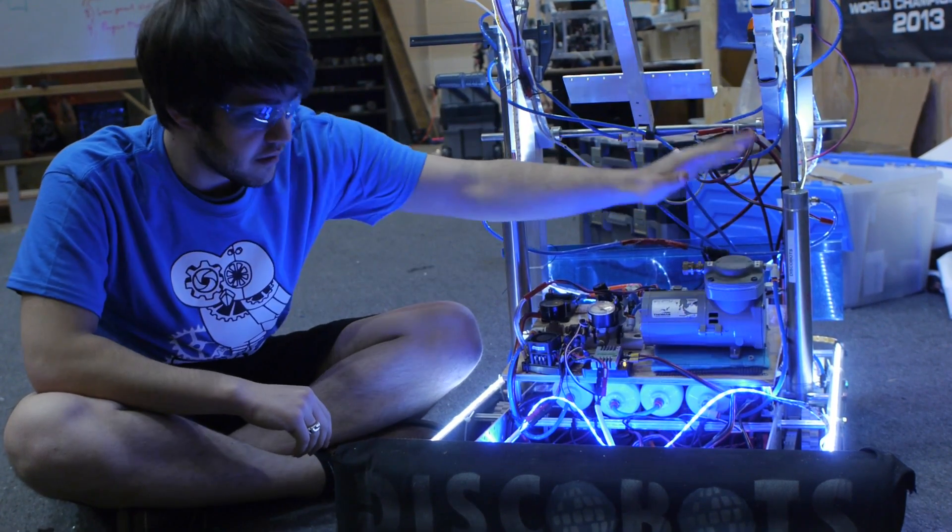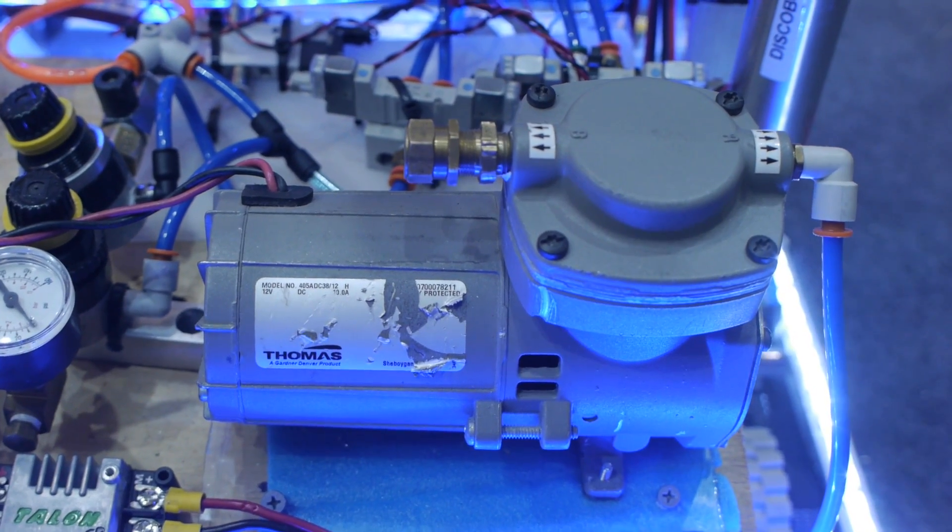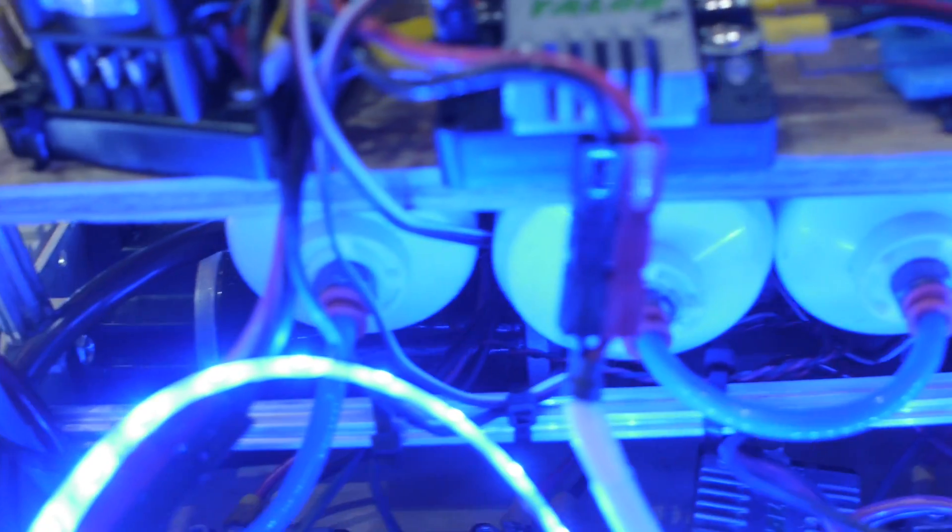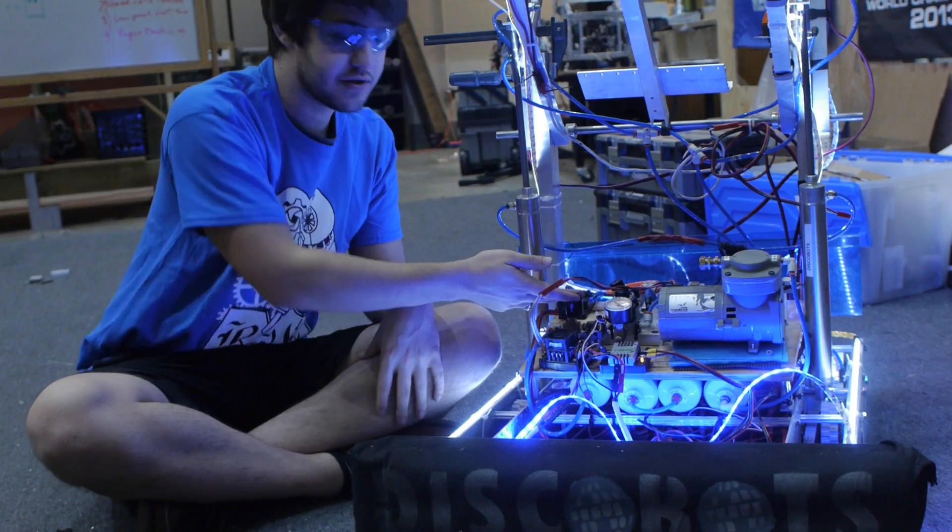So the first main part of your pneumatic system is your compressor. It charges your air tanks which are down here. The air tanks are allowed to be kept at a maximum of 120 psi. You regulate that with these valves and these gauges you look at.